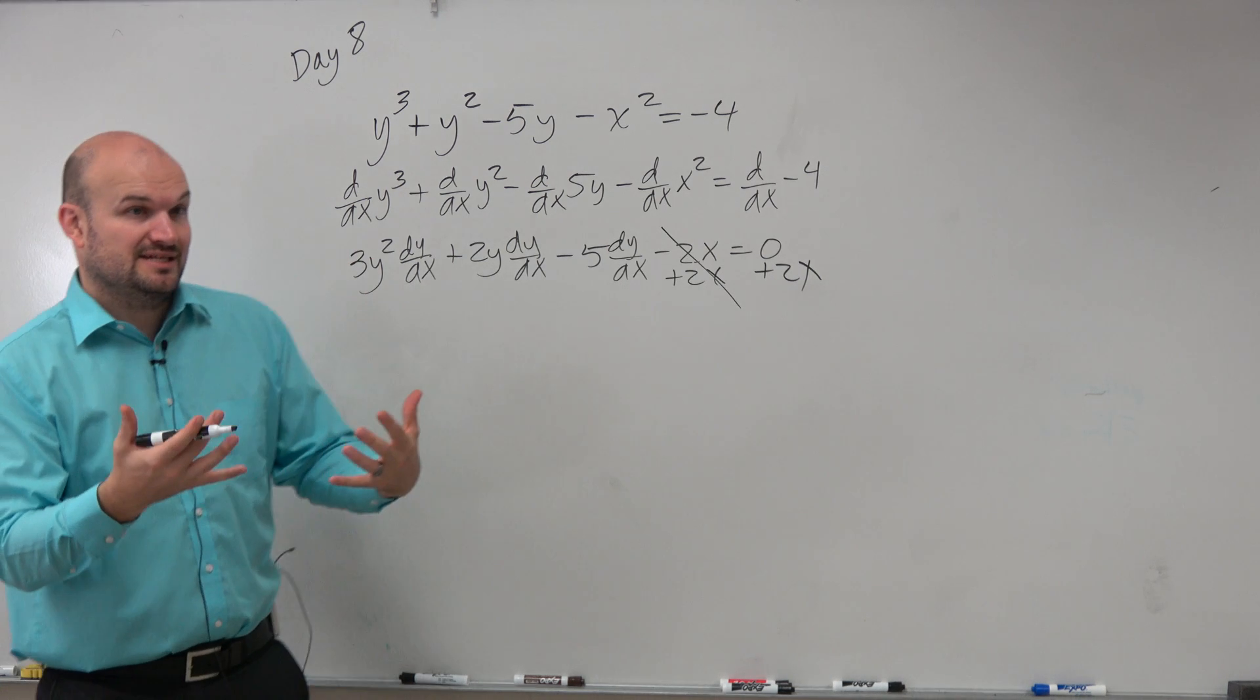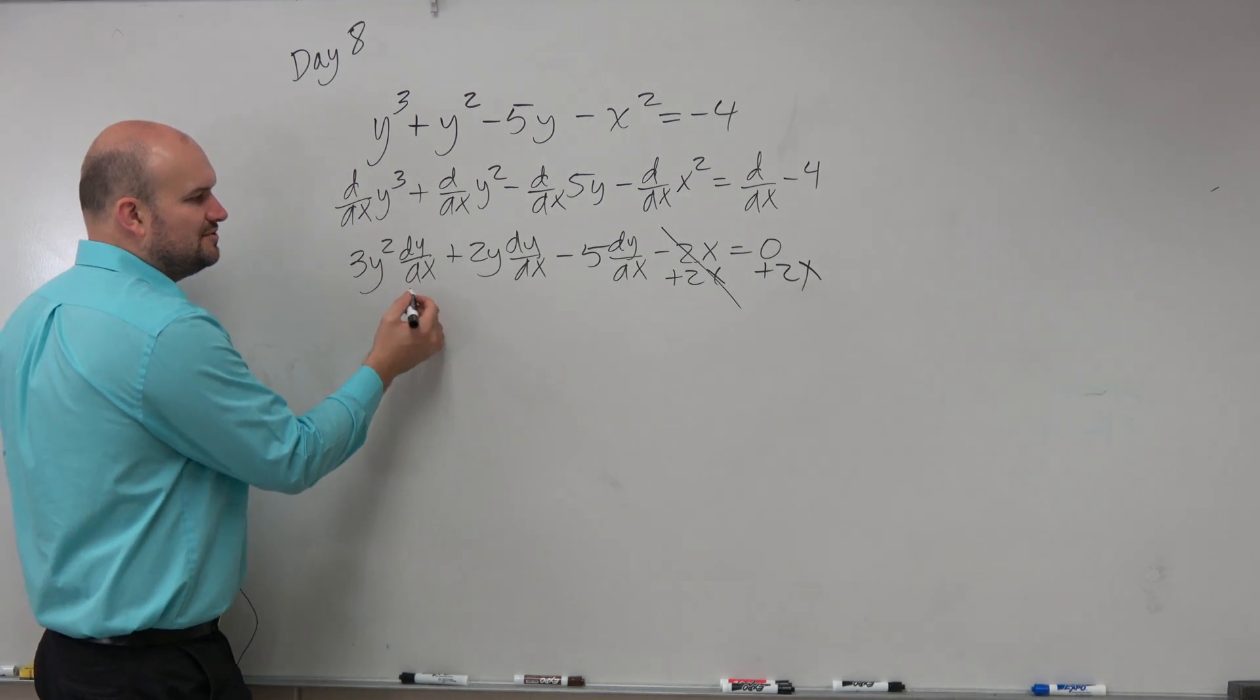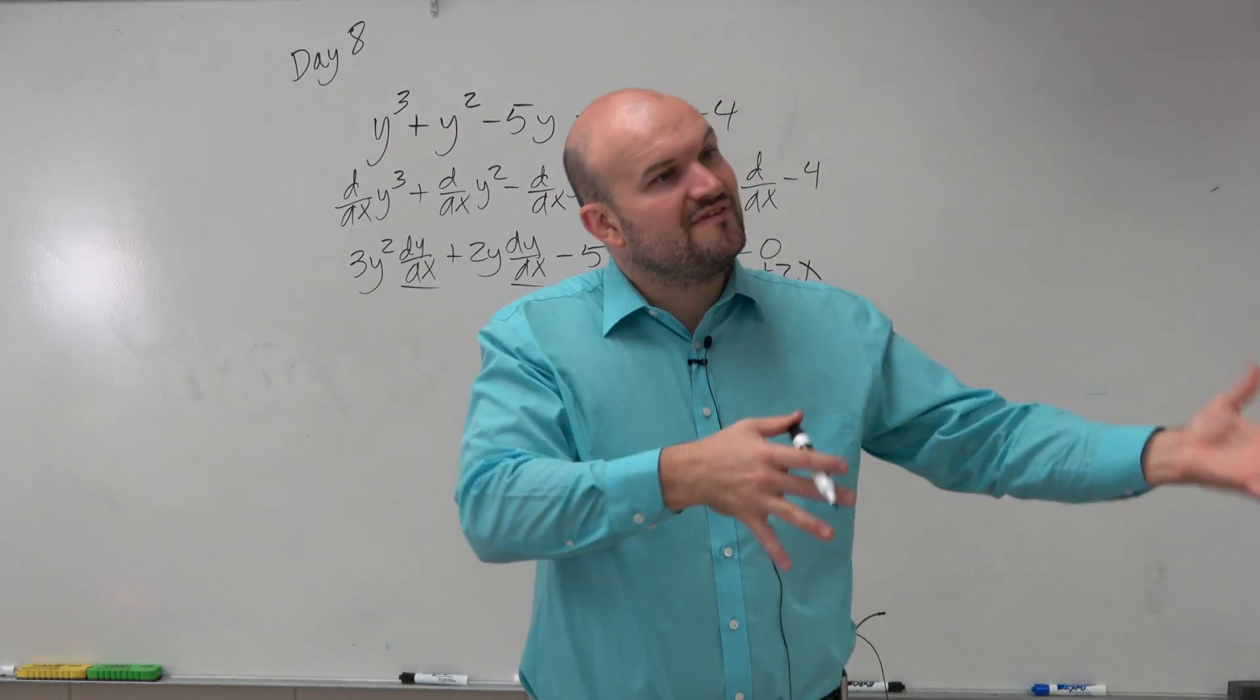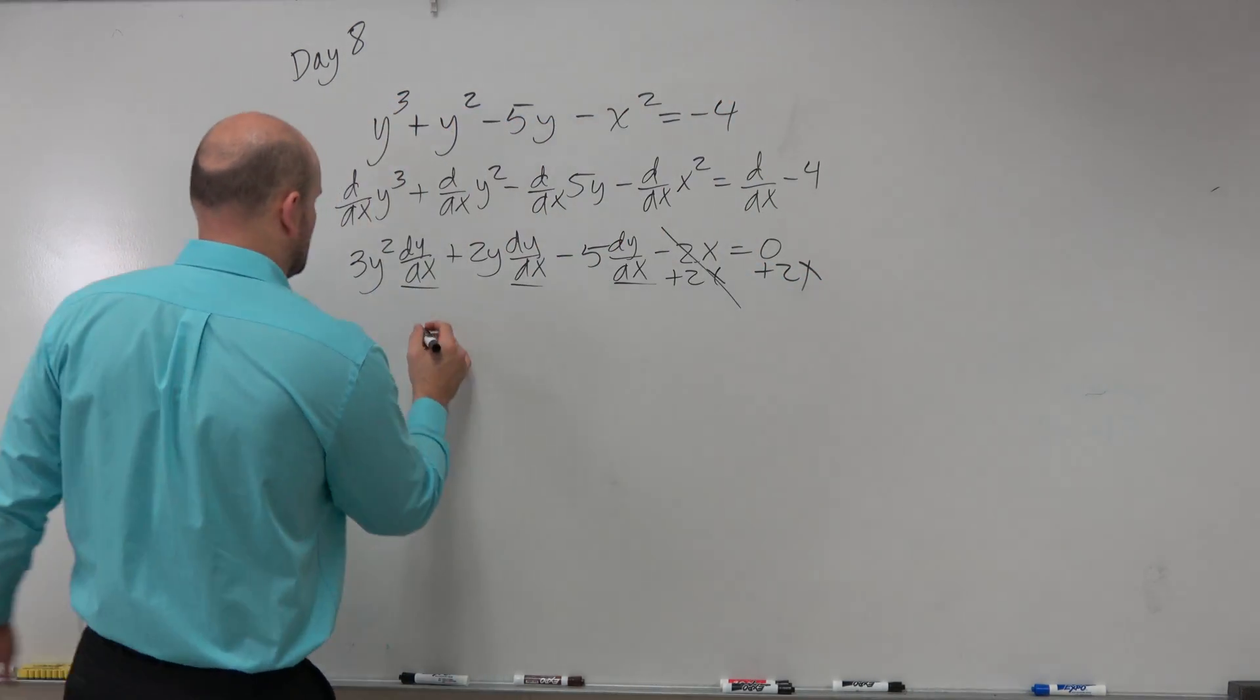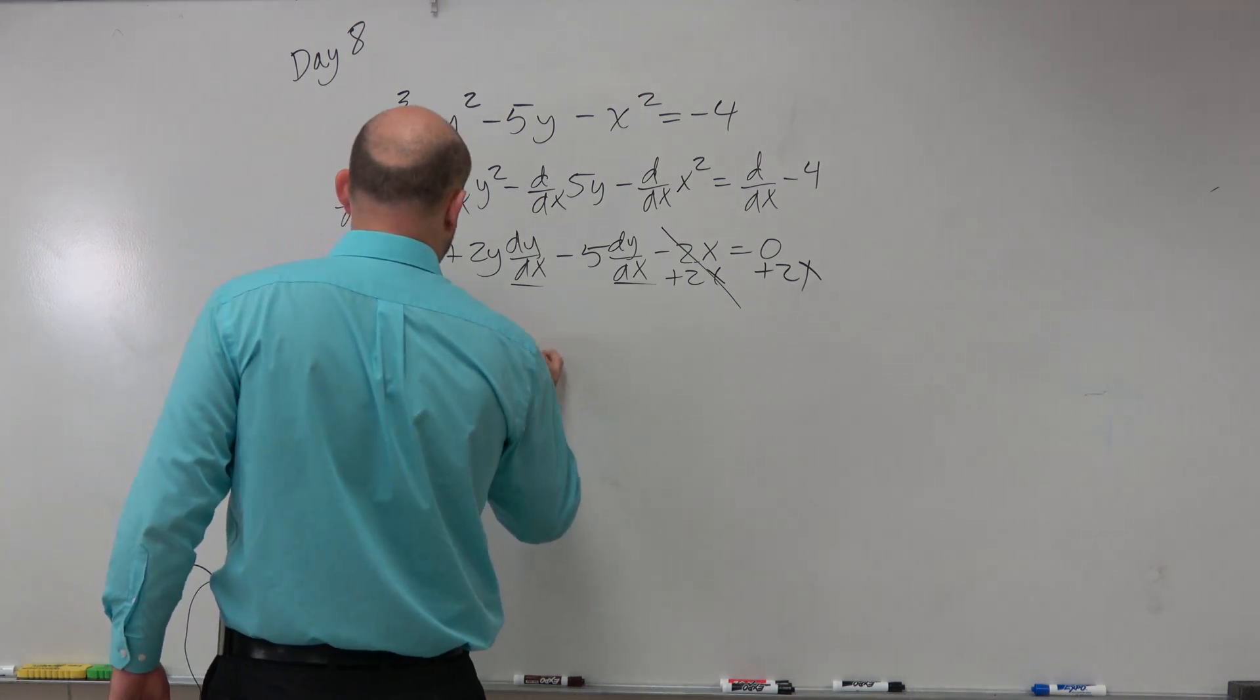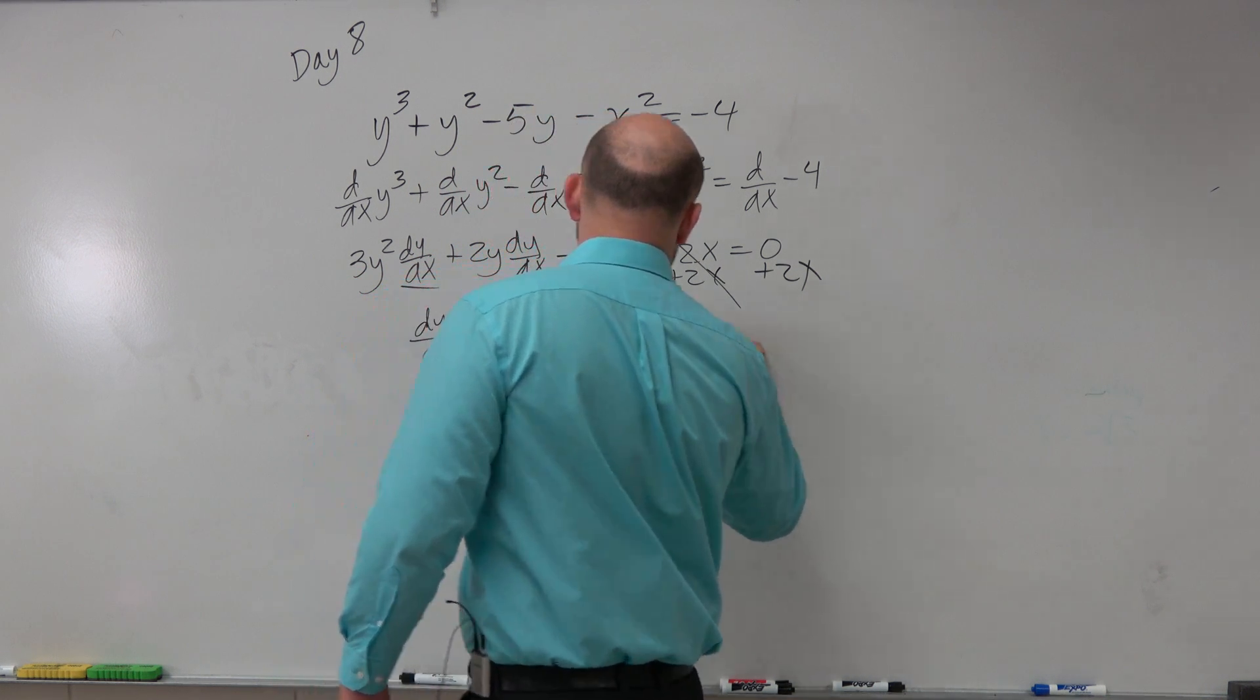is I can't combine these. They're not like terms. But what I can do is notice that they all have a dy dx. So I can factor out a dy dx. And when I factor out dy dx, I'm left with 3y squared plus 2y minus 5 equals positive 2x.